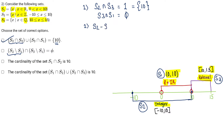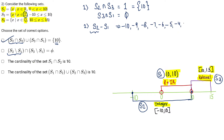Now let's talk about option B. The symbol S2 minus S1 means the values of X which are in S2 but are not common with S1. I need the values of S2 but remove the integer terms that are also in S1. So S2 will include minus 10, minus 9, minus 8, minus 7, minus 6, minus 5, 4, 3, 2, 1, and 0 — since 0 is not in S1.